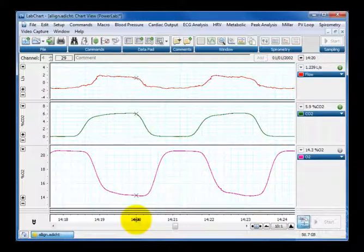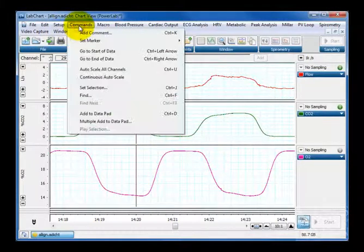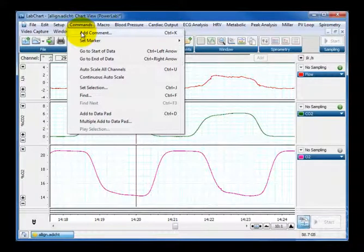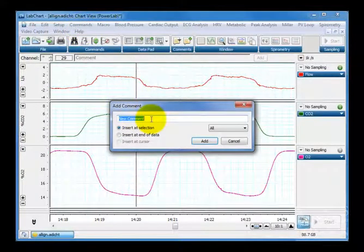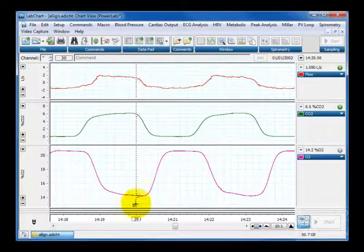So if I place my cursor where I believe the end tidal measurement should be taken, which is this point here, I'm going to add a marker just for the sake of doing the analysis. I'm going to add a comment and I'm going to call it just ET, and there we are we've got ET added.